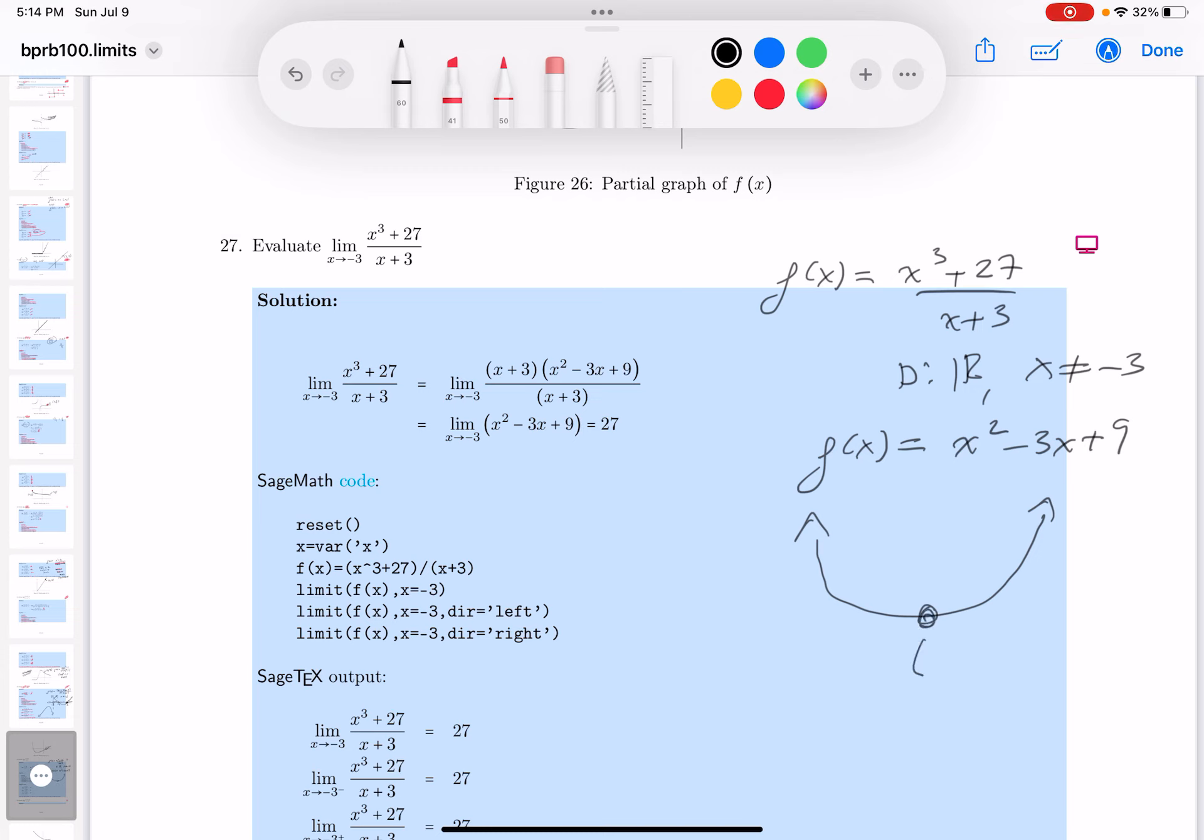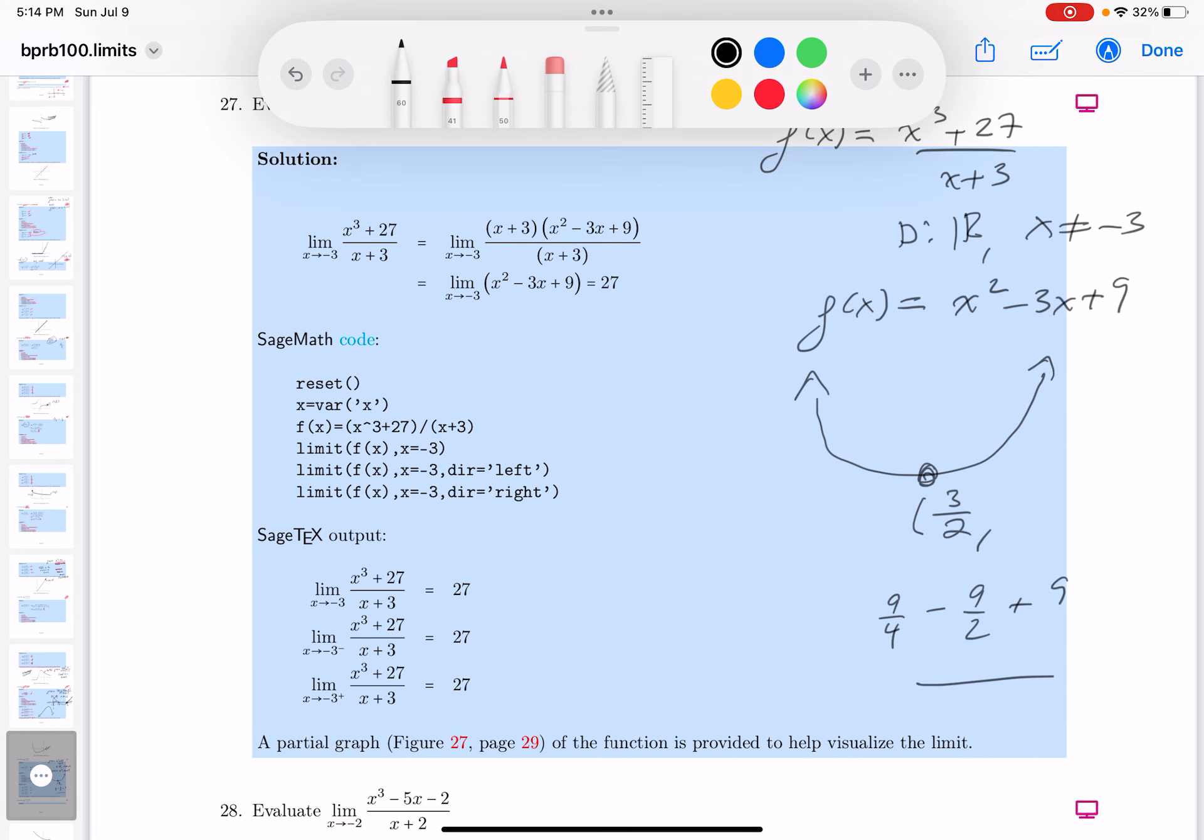Let's see, -b, which would be 3, over 2a. That's 3/2. And then let's plug the number in and see what you get: 9/4, and then you get -9/2 plus 9. I'm doing the y value. This is going to be over 4.